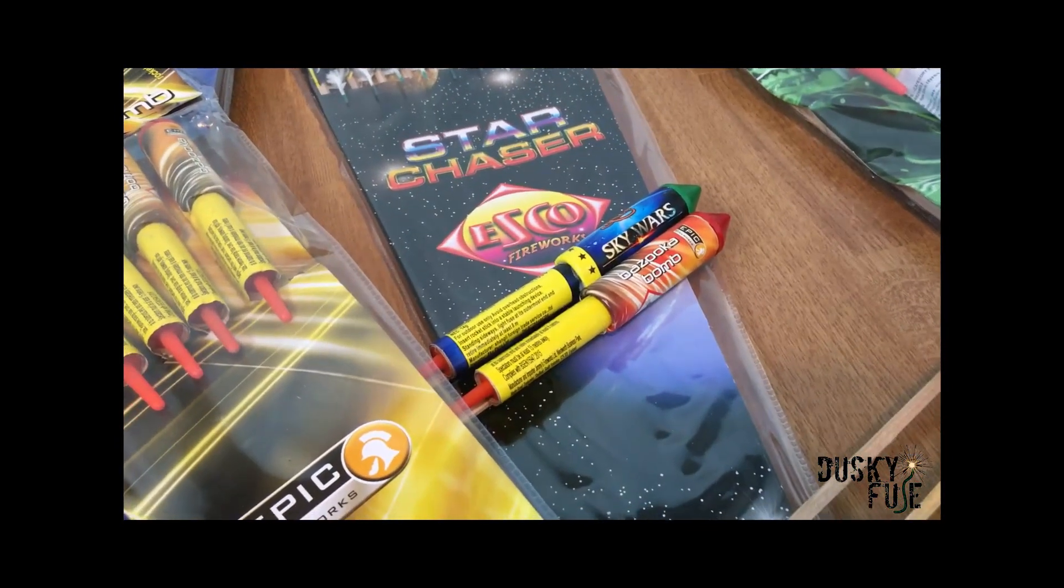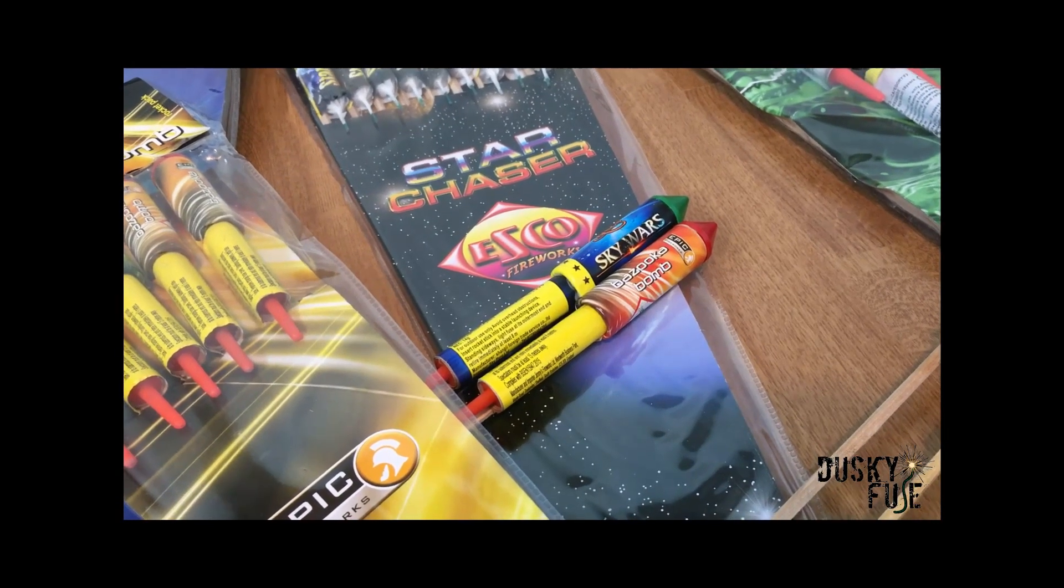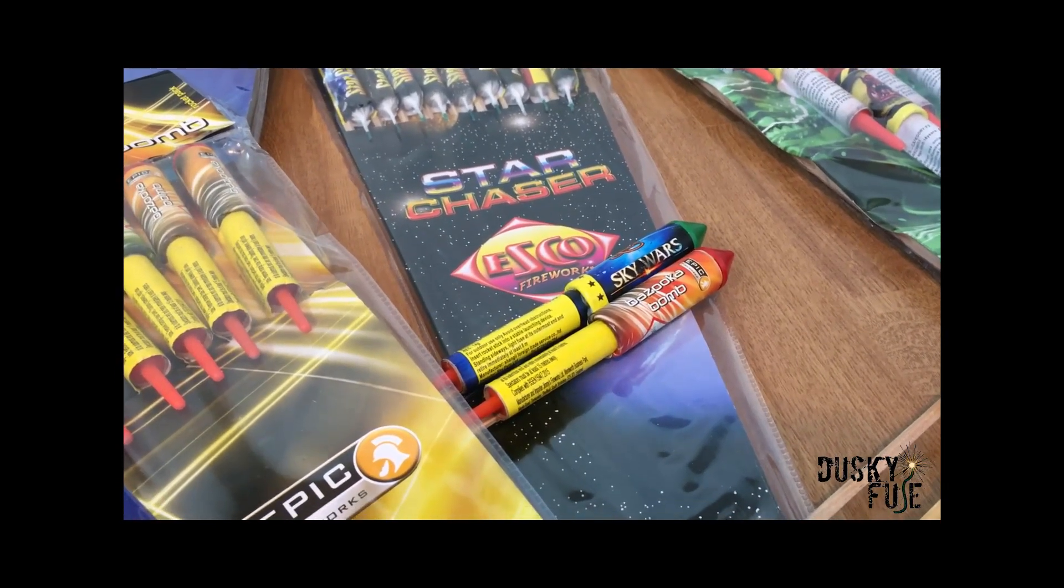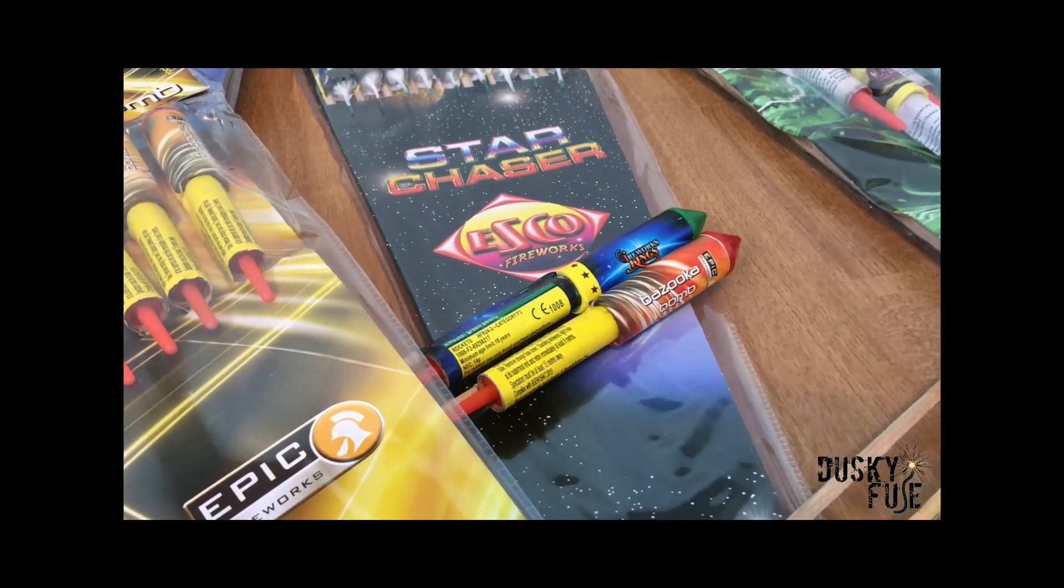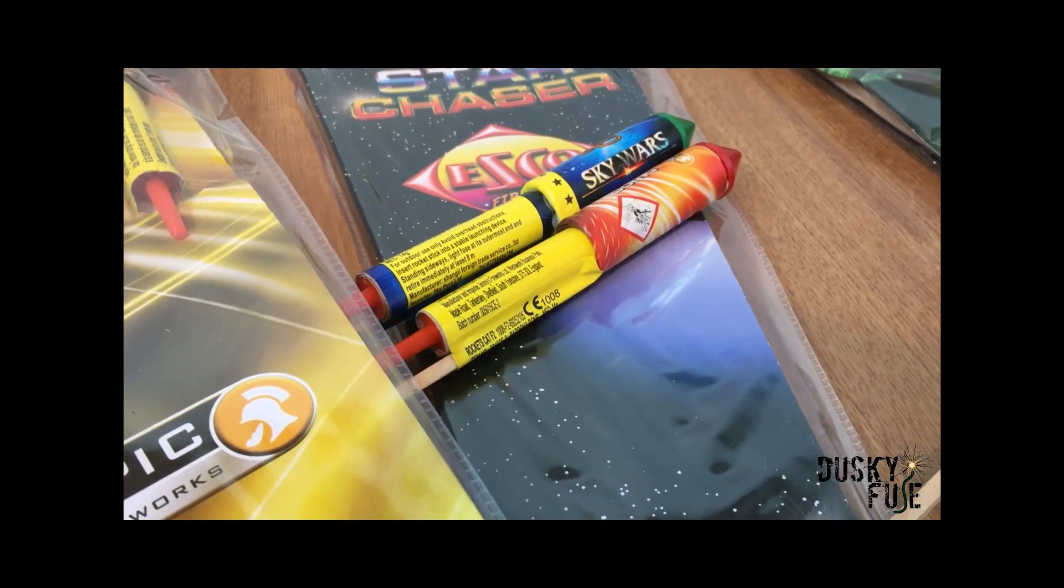So in the 1.3G corner we have a Skywars rocket by Firework King. We also have a Bazooka bomb by Epic. In order for this video to be mildly scientific, they all have the same effect which is a Green Peony. Both of these rockets have 14 grams of powder.